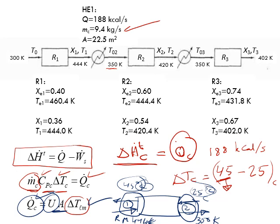If you're interested, you can calculate the duty, mass flow rate of coolant, and area of the heat exchanger for the other heat exchangers, and also calculate V1 and V3. With this, we finish example 8.7. Looking forward to seeing you again in the following lecture.